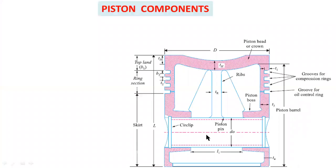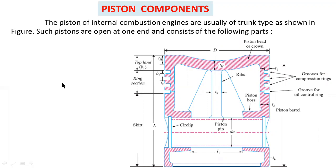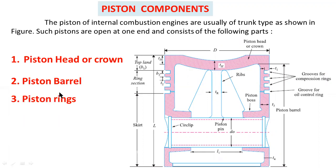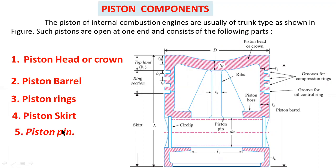The pistons of internal combustion engines are usually of the trunk type. Such pistons are open at one end and consist of the following parts: piston head or crown, piston barrel, piston rings, piston skirt, and piston pin. These five are very important components in a piston.